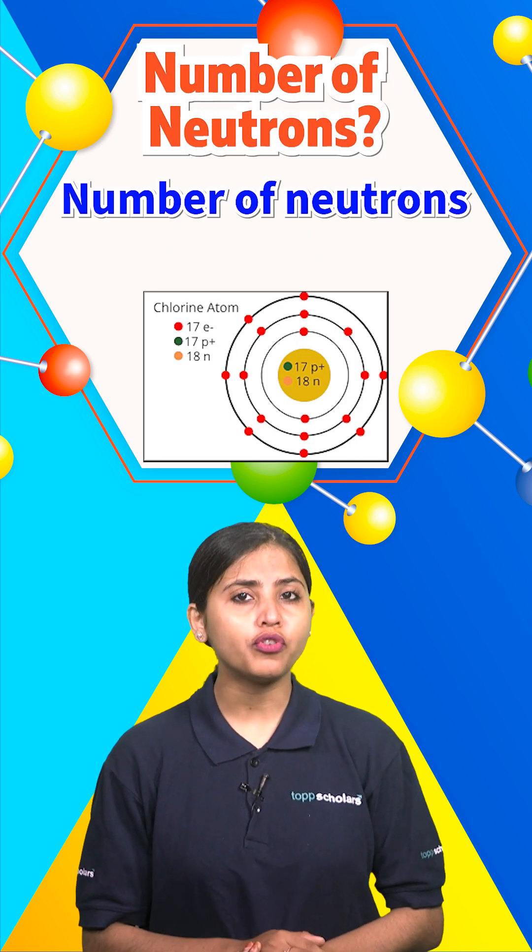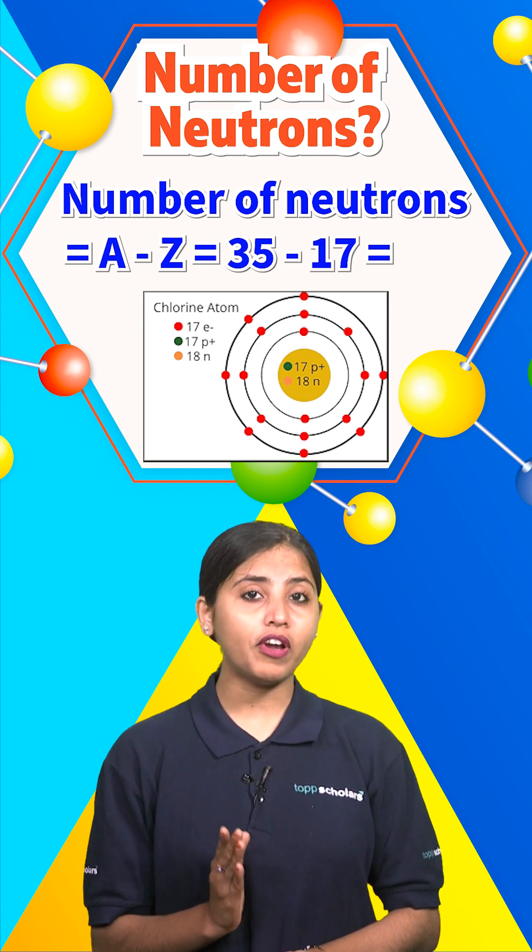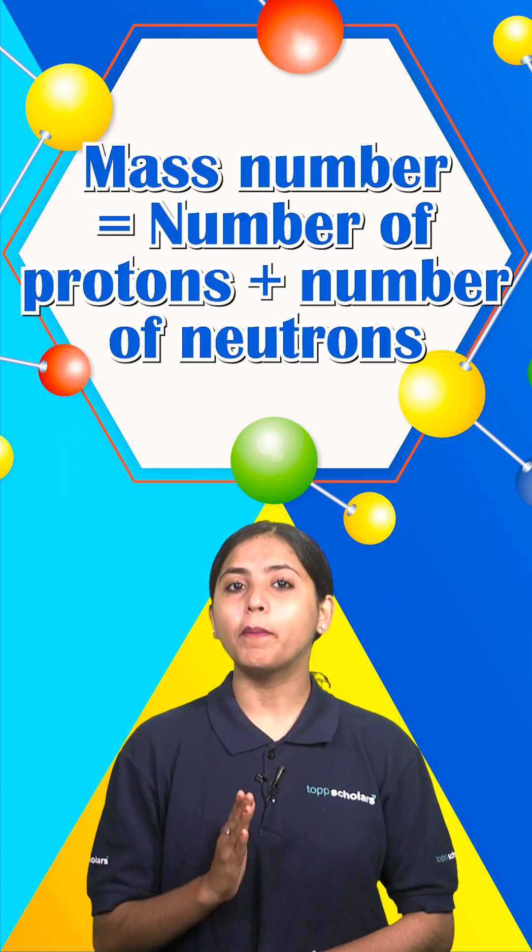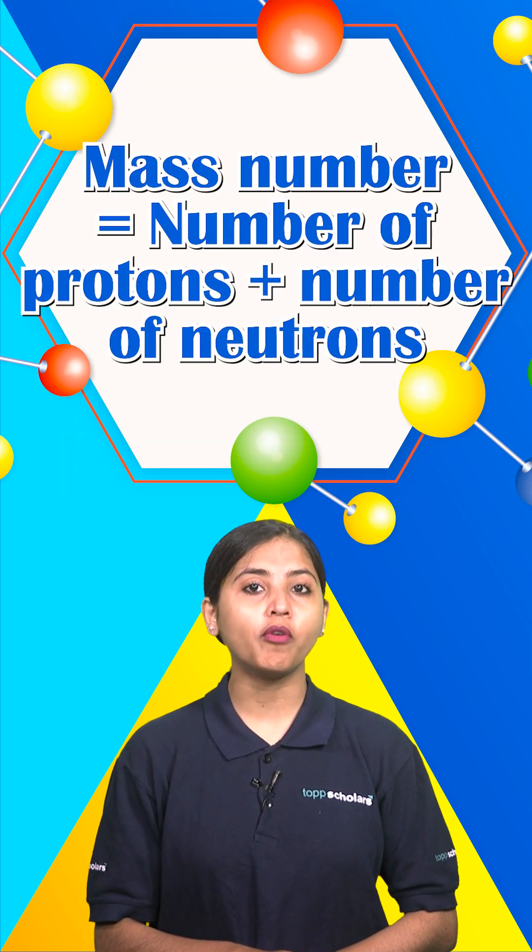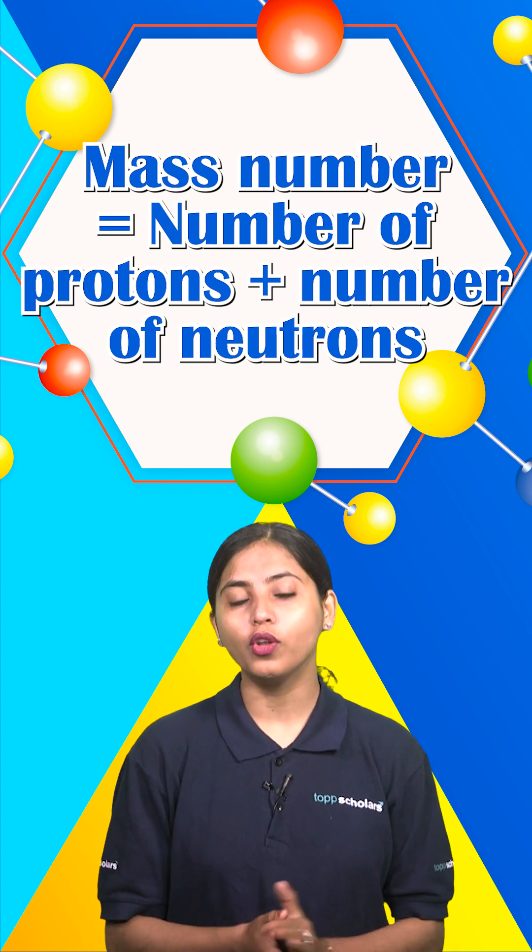For number of neutrons, subtract the atomic number from mass number. So 35 minus 17 will give us 18. Also, the mass number is equal to the number of protons plus number of neutrons. Hope you can relate to all of these.